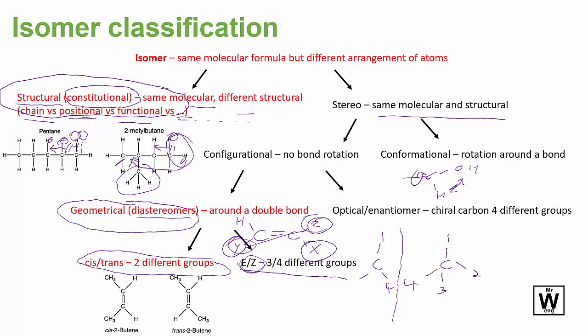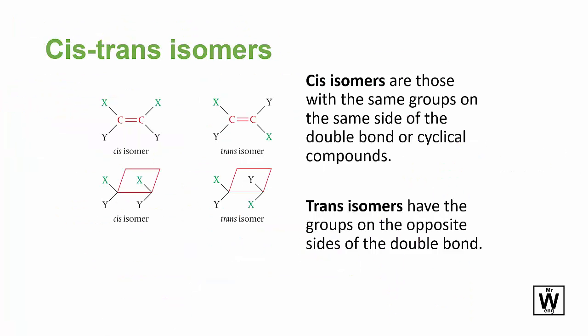So if it's a double bond, it can't rotate. They're stuck. And so these two are different compounds. And so we'll look at the cis-trans in these slides here. So cis-trans, if it's on the same side, according to this picture, then that's cis.